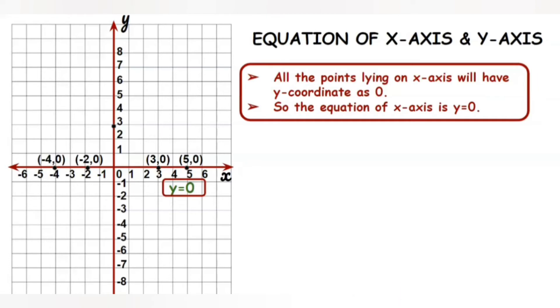This point is (0,3), this point is (0,6) and this is (0,-2), this point is (0,-4) and one more point (0,-7) and so on.